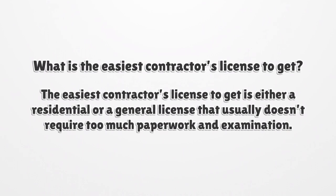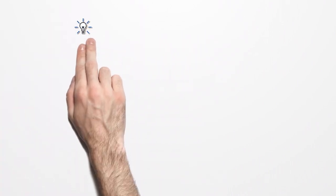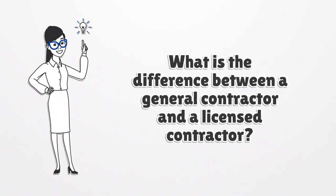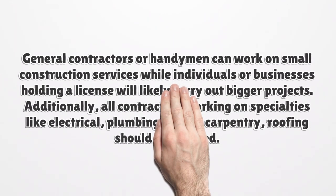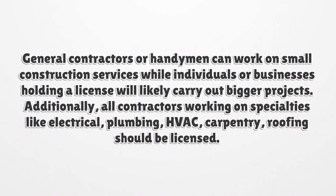What is the easiest contractor's license to get? The easiest contractor's license to get is either a residential or a general license, which usually doesn't require too much paperwork and examination. What is the difference between a general contractor and a licensed contractor? General contractors or handymen can work on small construction services, while individuals or businesses holding a license will likely carry out bigger projects.